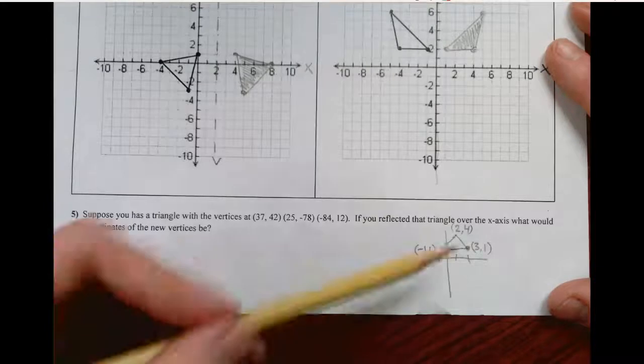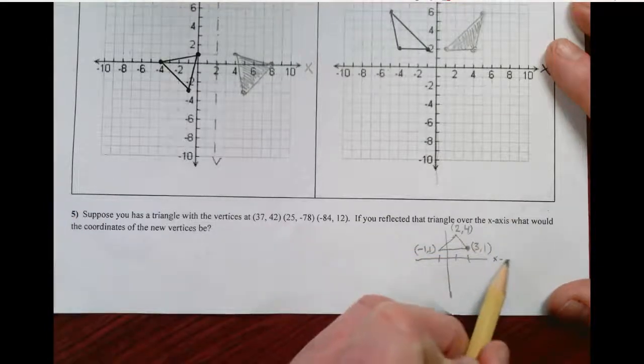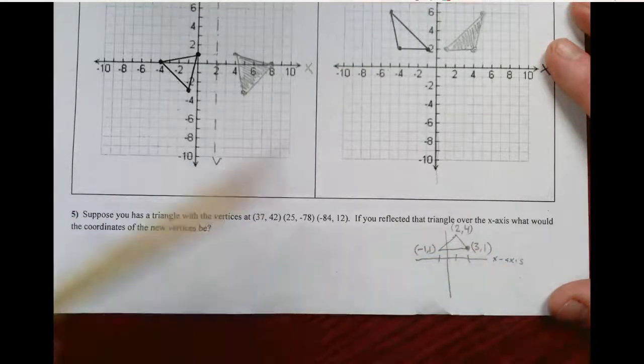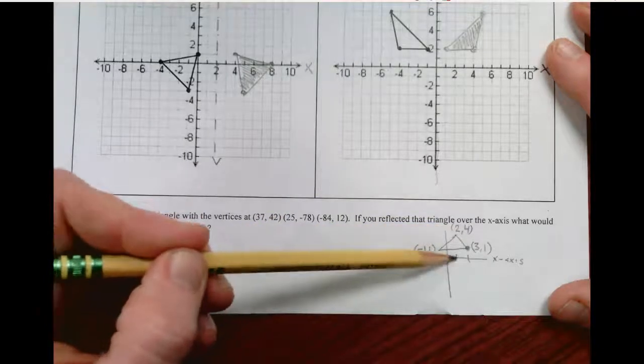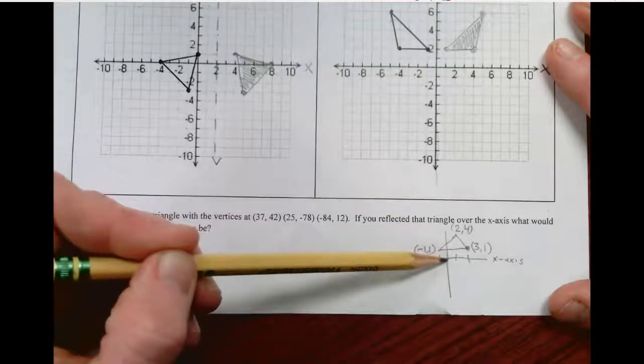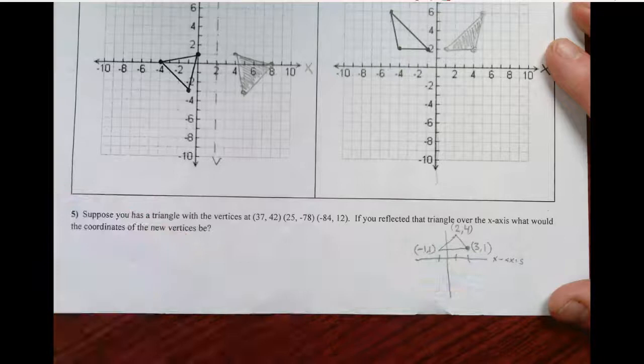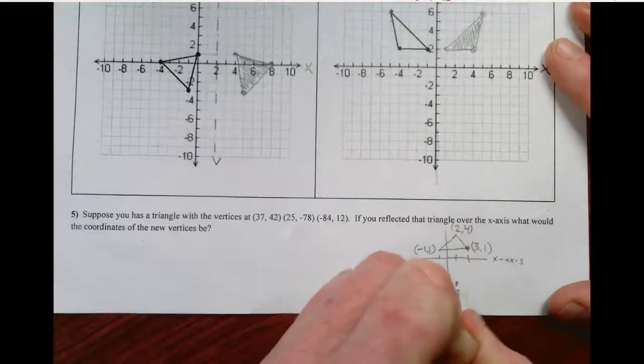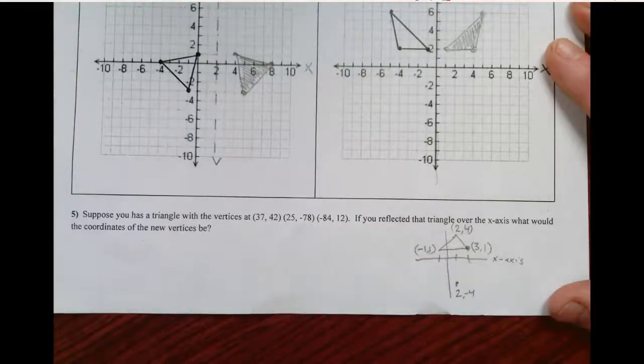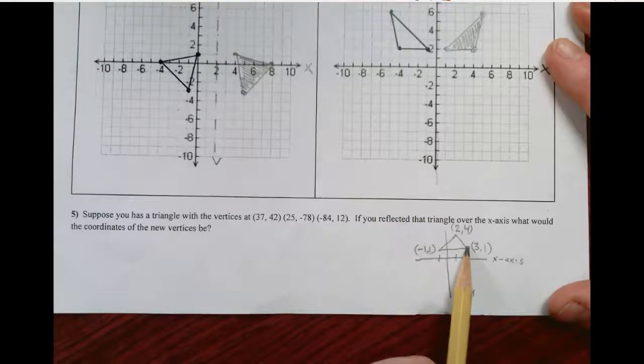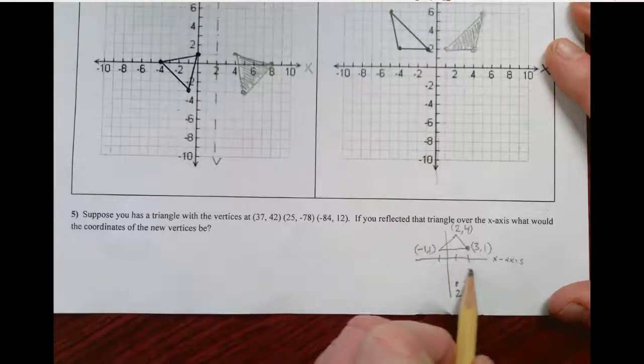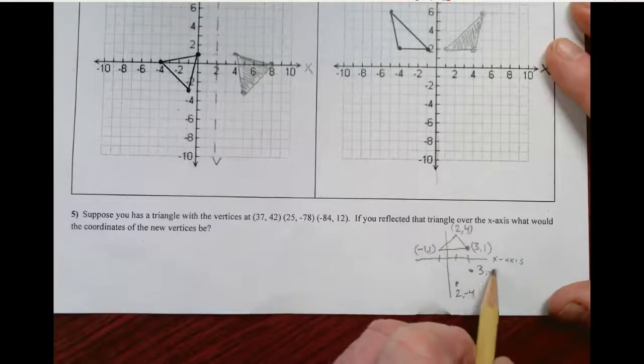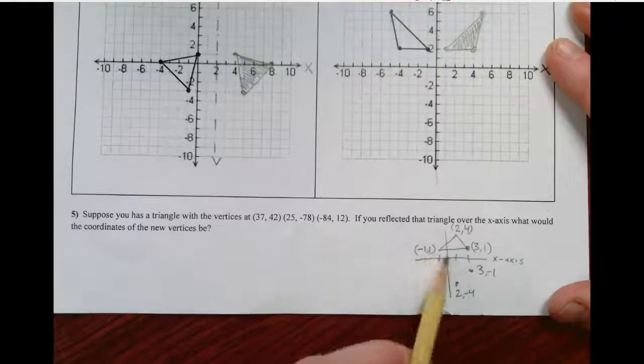If we flip that over the x-axis, this 2, 4 becomes 2, negative 4. This 3, 1 becomes 3, negative 1.